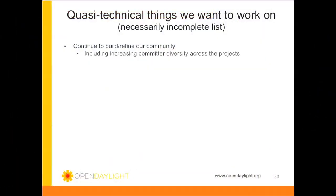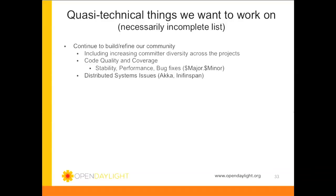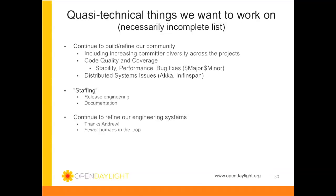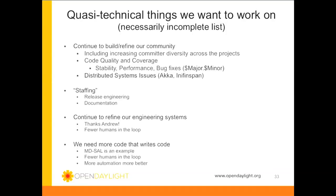Let me say a few things about quasi-technical priorities. We've got to continue to build community — that's really important. We need code quality and coverage, stability, performance, and bug fixes. I'm not sure how that gets handled in OpenStack, but I know Icehouse, at least in the case of Neutron, really focused on stability and performance and bug coverage — so we have to do that. Distributed systems — we don't have that nailed down. Like I said, we have InfiniSpan but we're looking at ACCA. Staffing and release engineering — we don't actually have a release engineer. Documentation. Engineering systems — the Linux Foundation supports us, and Andrew is really great. We need fewer humans in the loop. When we did the last release it was way too manual, not automated enough — that had to do with botching the numbering of things. We basically need more code that writes code in the project — fewer humans, more automation.